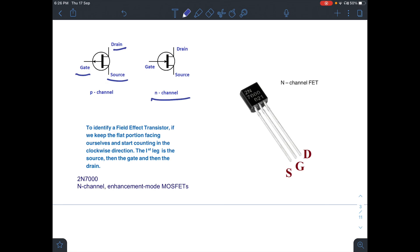This diagram shows a typical field effect transistor of the series 2N7000. These 2N7000 series are n-channel enhancement mode MOSFETs. FET are also of two types: JFET, that is junction field effect transistor, and MOSFET.